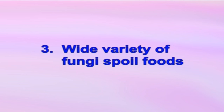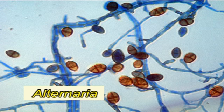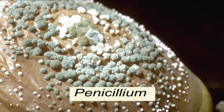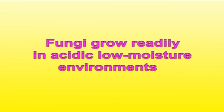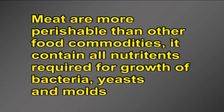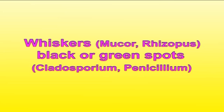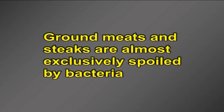A wide variety of fungi spoil foods. Some of the most common fungi include Rhizopus, Alternaria, Penicillium, Aspergillus, and Botrytis. Fungi grow readily in acidic, low moisture environments. Meat is more perishable than other food commodities; it contains all the nutrients required for growth of bacteria, yeast and molds. Whiskers caused by Mucor and Rhizopus, black or green spots caused by Cladosporium and Penicillium. Ground meats and steaks are almost exclusively spoiled by bacteria.